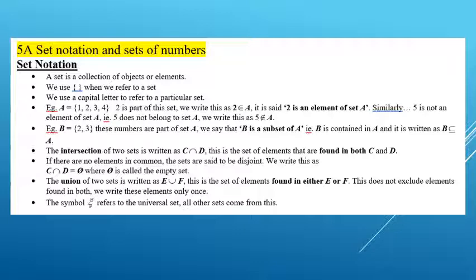Let's read through the notes. A set is a collection of objects or elements — that's a collection of things. For example, the number of boys in the year 11 methods class is a set. We use curly brackets when we refer to a set, and a capital letter to name a particular set.